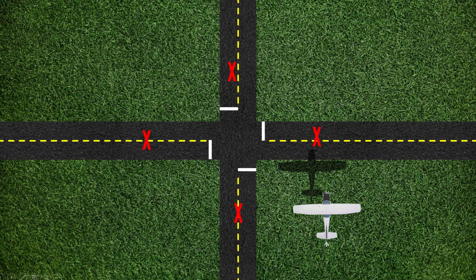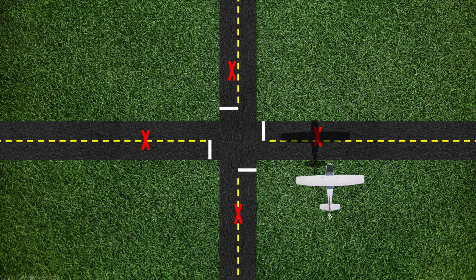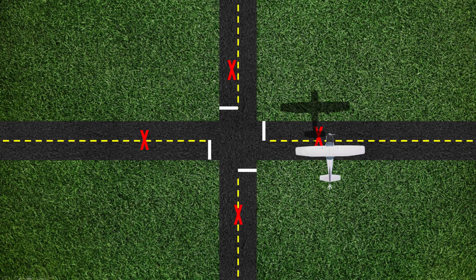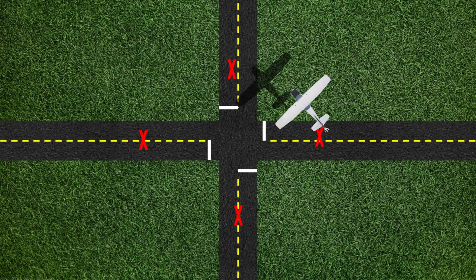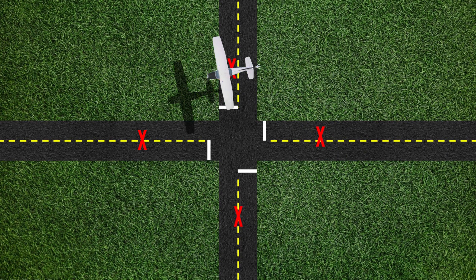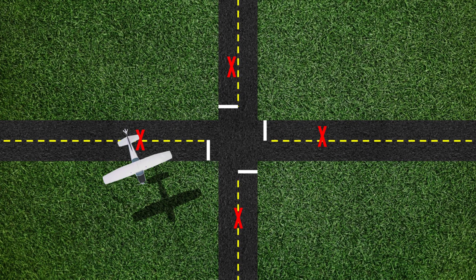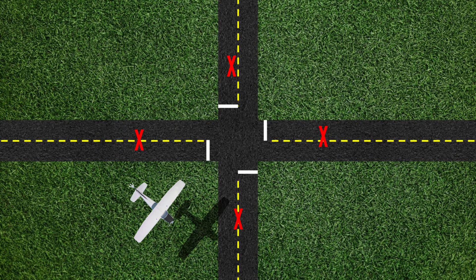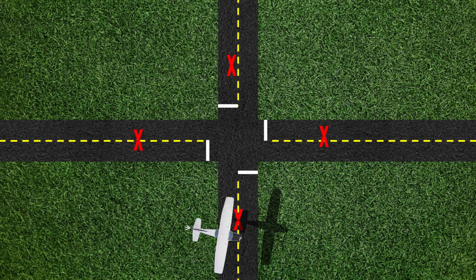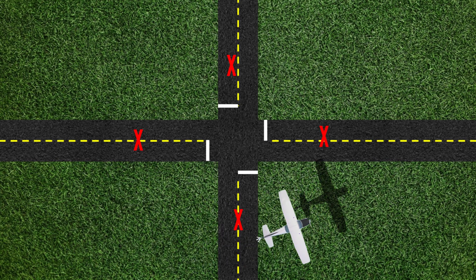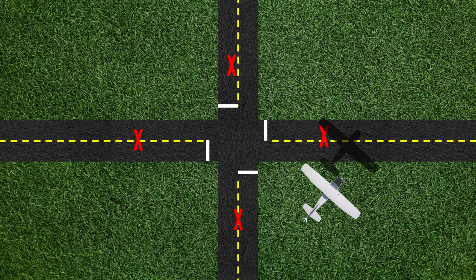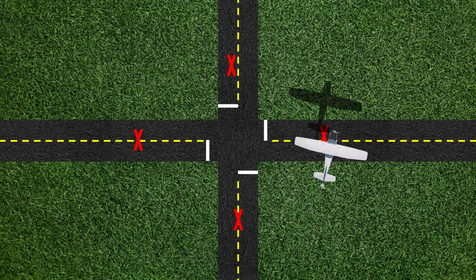When setting up for the maneuver, choose four aiming points that are equally distant from the reference every 90 degrees and fly the aircraft over these points. This will help make each turn uniform and equidistant from the point.